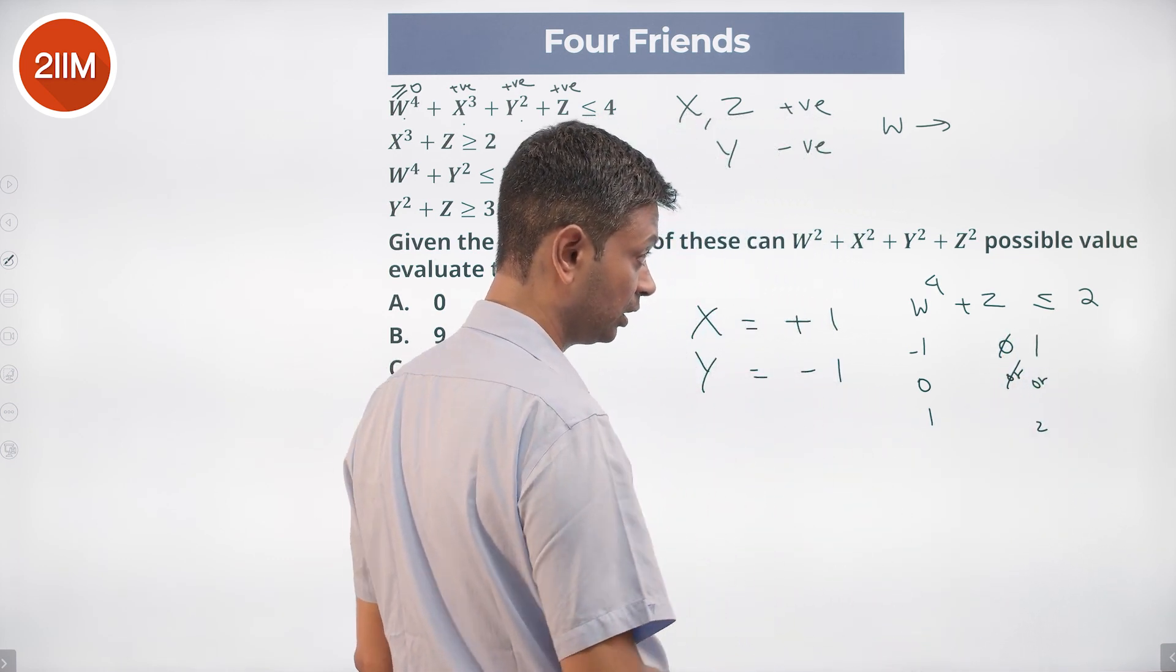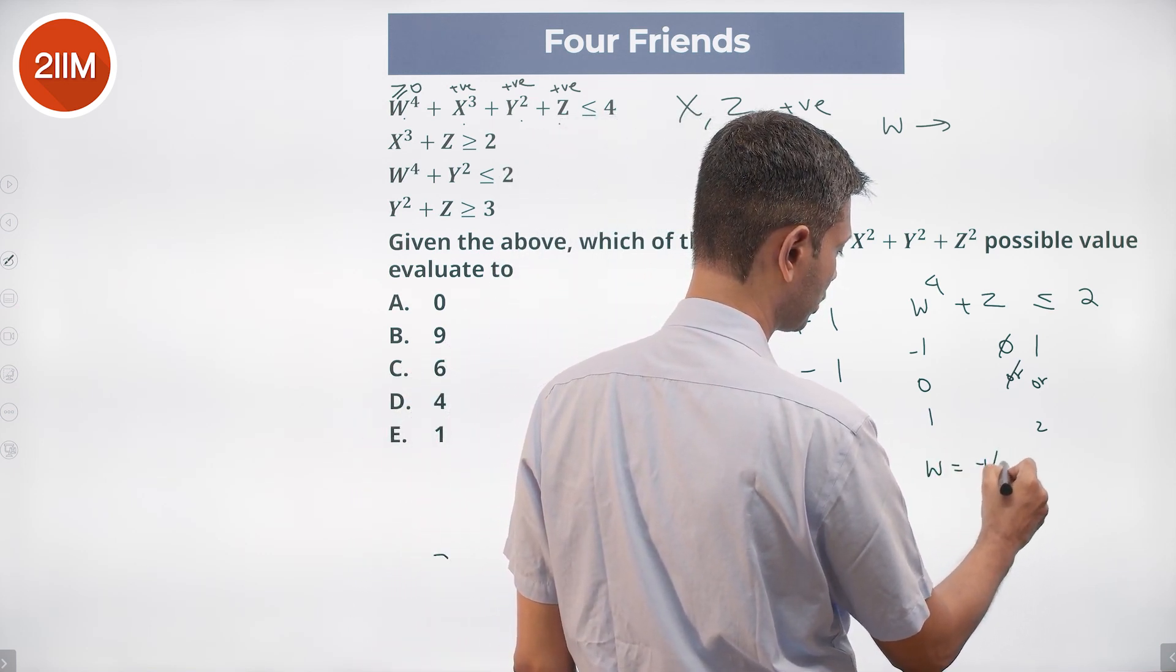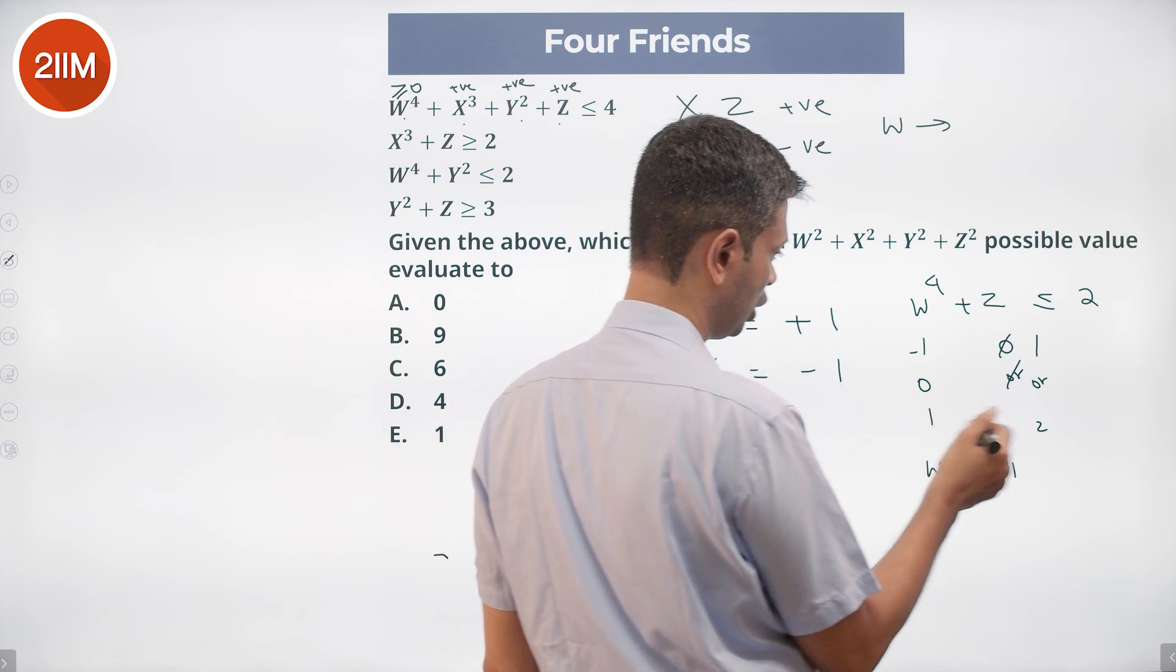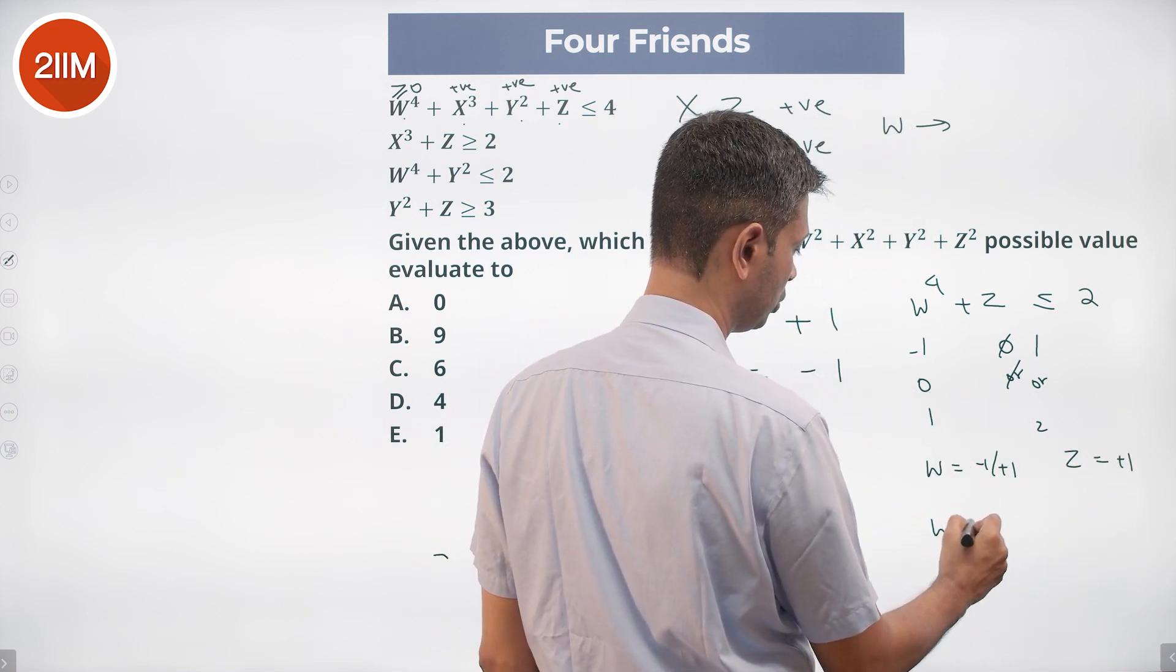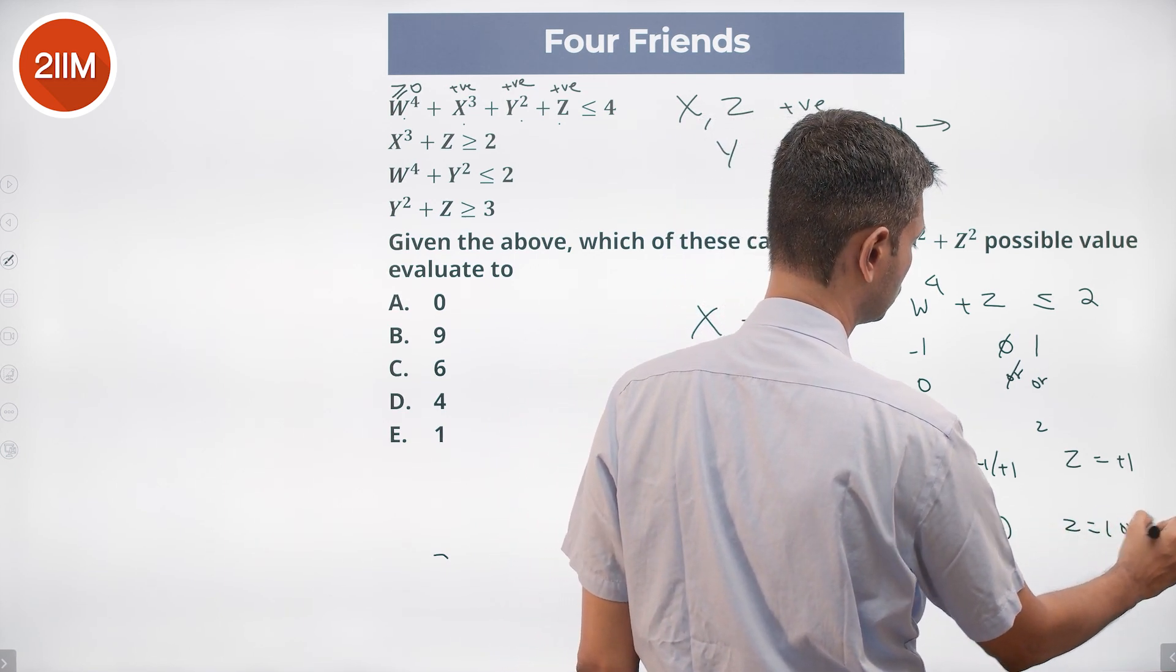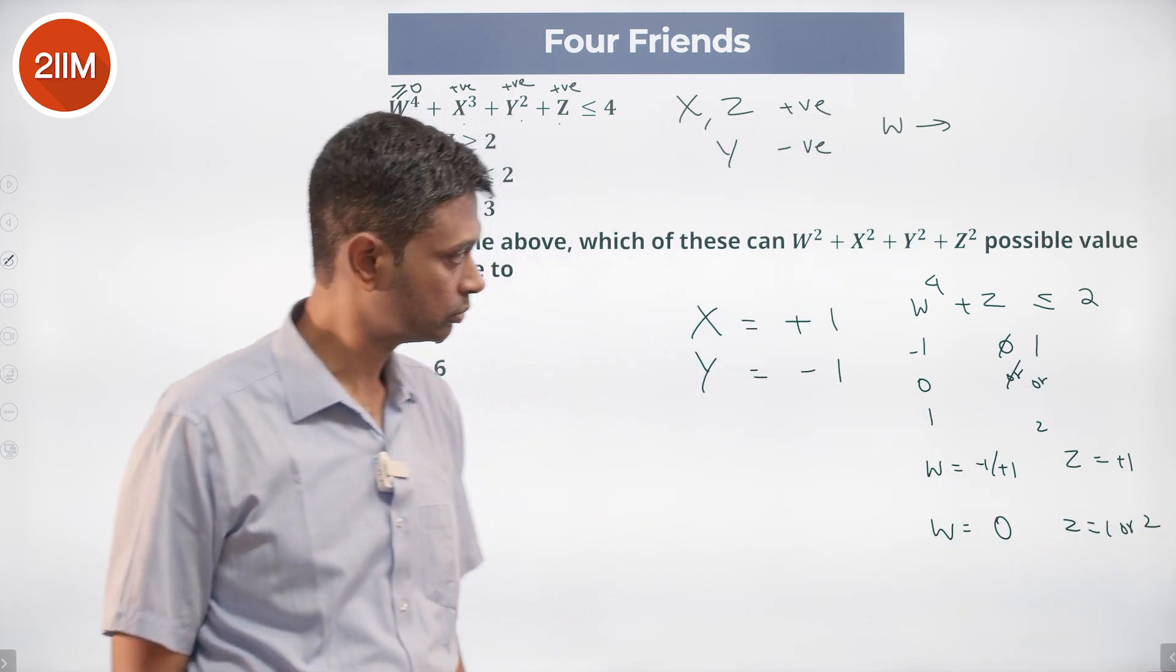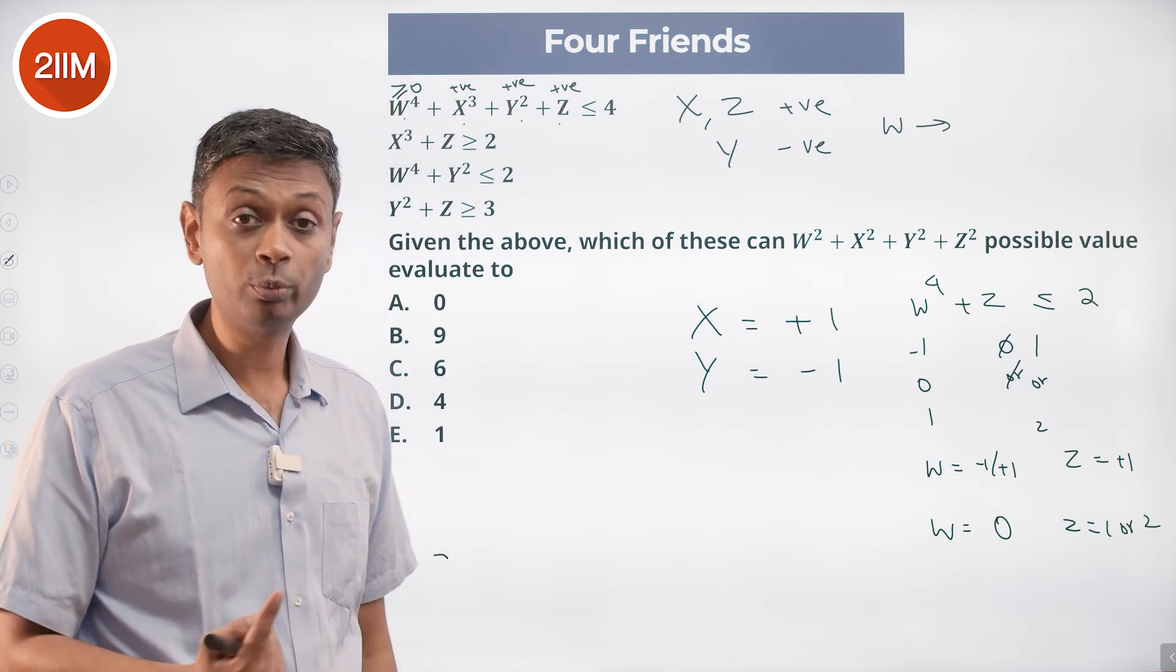More specifically, W could be minus 1 or plus 1, in which case Z has to be plus 1. Or W could be 0, in which case Z could be 1 or 2. W is 0, Z could be 2 also.